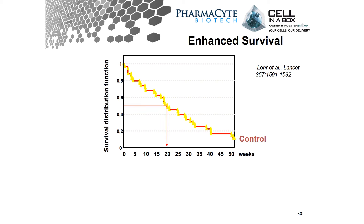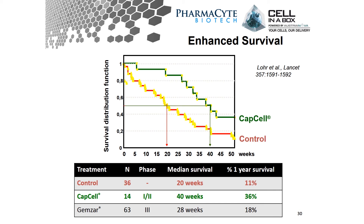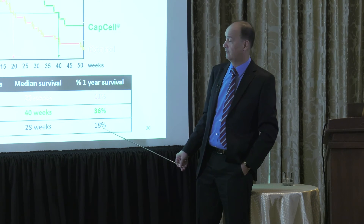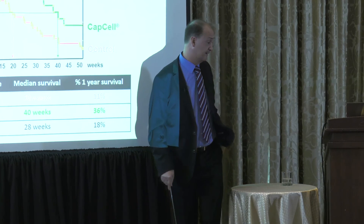Perhaps the most exciting data came from the survival data. The median survival of a matched control group from the same clinical center — age, disease, symptom, and sex matched — showed a median survival of 20 weeks on best care at the time, which was 5-FU. Patients receiving encapsulated cells and low-dose ifosfamide showed a doubling of median survival, from 20 weeks to 40 weeks. GEMSAR had just completed a phase 3 trial with a median survival of 28 weeks. One-year survival was 11% for the control, 18% for GEMSAR, and 36% for the encapsulated cells with low-dose ifosfamide.